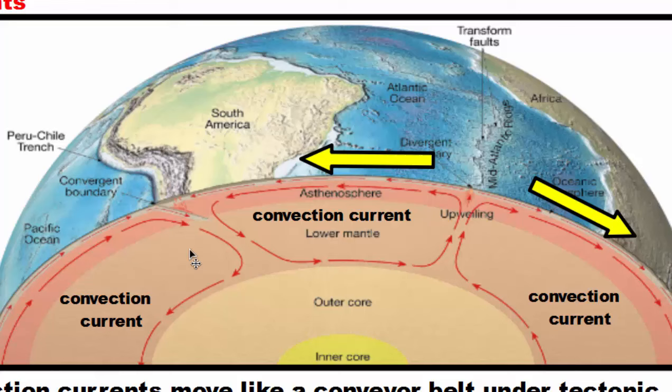However, sometimes plates do come together based on the convection currents around them. If you take a look at this convection current here, you'll notice that the material is flowing in this direction towards South America. So what happens now is that you have the Pacific plate — the ocean floor in the Pacific Ocean — colliding with the South American plate, the continent of South America. Because of the convection currents below the Earth's surface, we actually have plates colliding or separating.